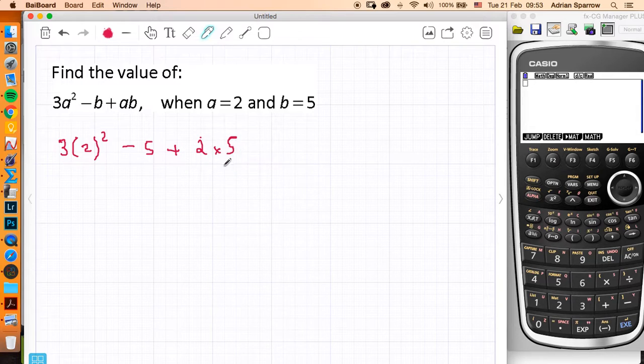Now I'm going to go through BIDMAS, which says do the brackets first. Now I'll put a bracket around here just to make sure it's not 32, but what it means is brackets, there are no brackets, but I've got indices, I've got this index first. So I'm going to do 2 to the power of 2, which is 4, and now it's 3 times 4.